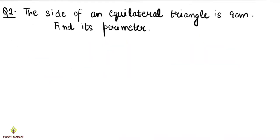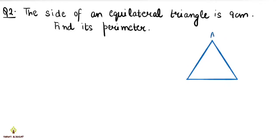The next question: the side of an equilateral triangle is 9 cm, find its perimeter. We have an equilateral triangle. What is an equilateral triangle? If I name this triangle ABC, AB, BC, and CA are all equal in length. So if the triangle is equilateral and the side is 9 cm, then all three sides are 9 cm each.